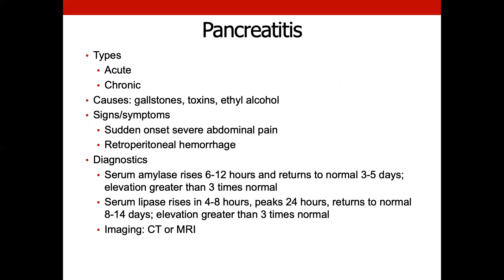Let's move into pancreatitis. Most often this is an acute illness you're going to see and will be something you refer out. It can be caused by gallstones, toxins, and alcohol — most of the time it's going to be due to stones and the surrounding inflammation. Most patients who present with this will have very severe abdominal pain, and usually they come in relatively quickly because it's a waxing and waning pain. These patients are doubled over, in obvious pain, sweating, clammy, and may be running a fever. A lot will come in in a wheelchair because they're that discomforted by it.